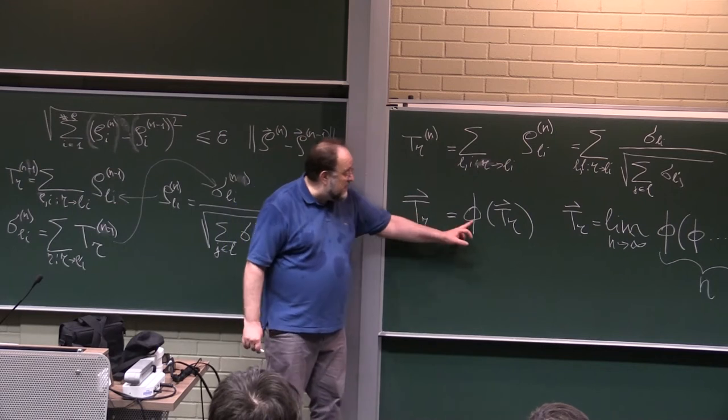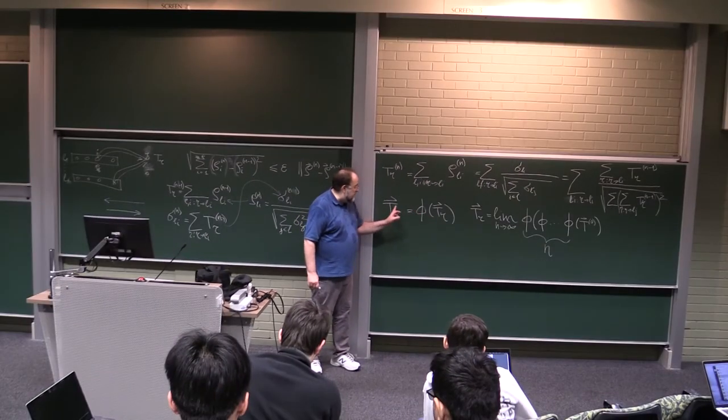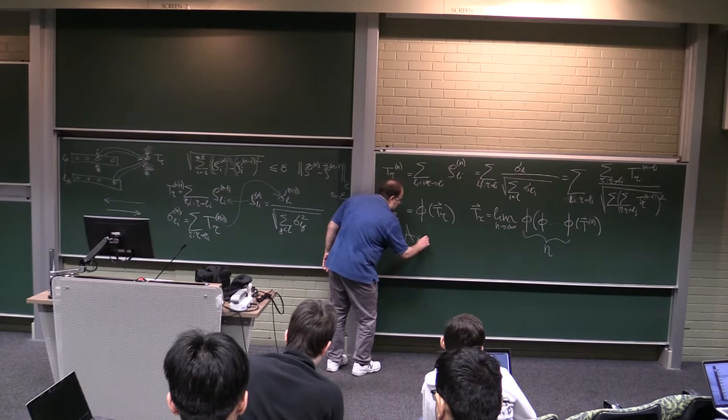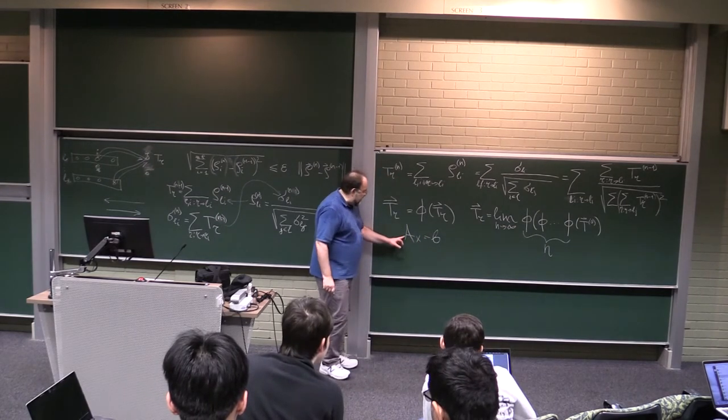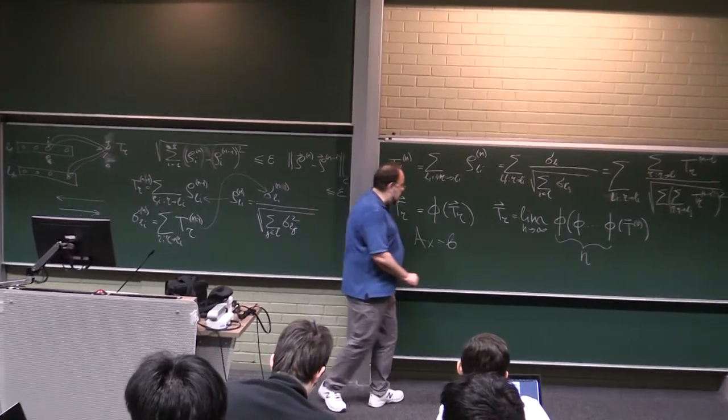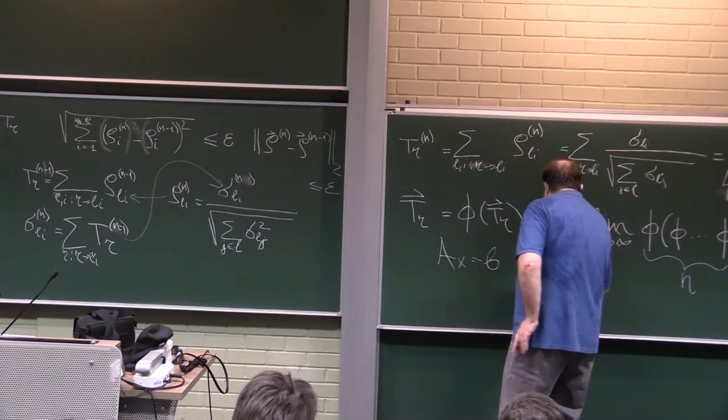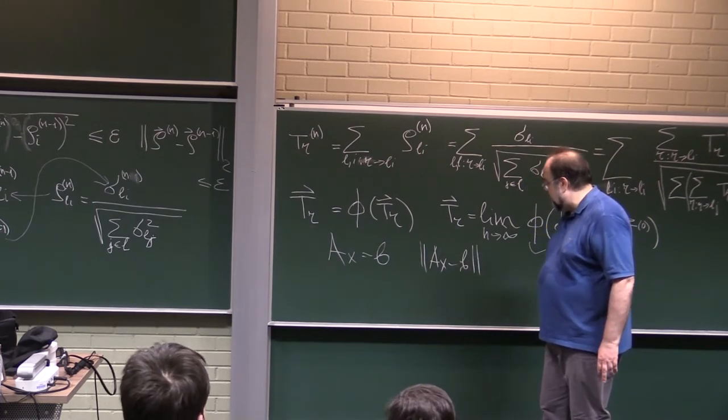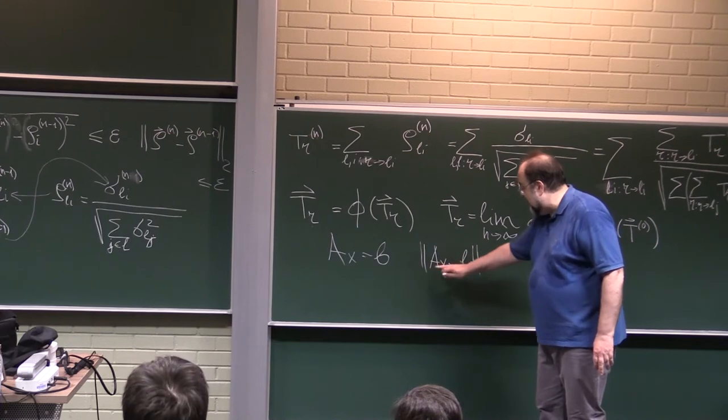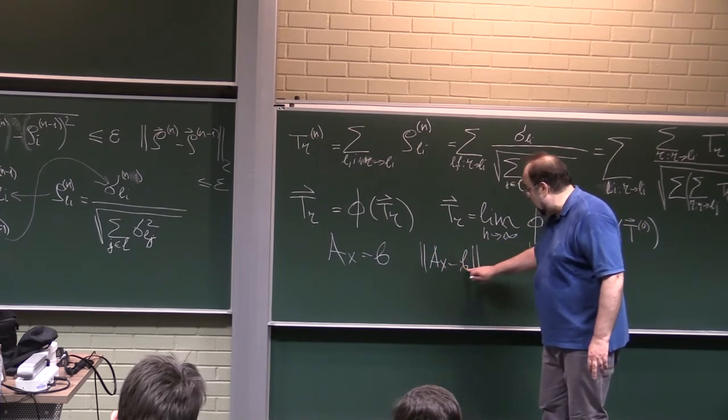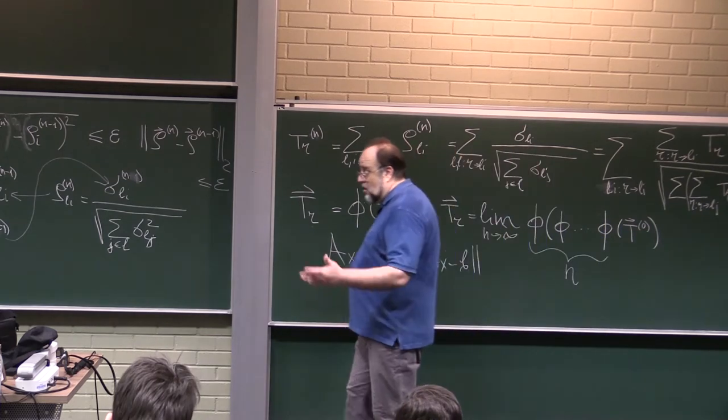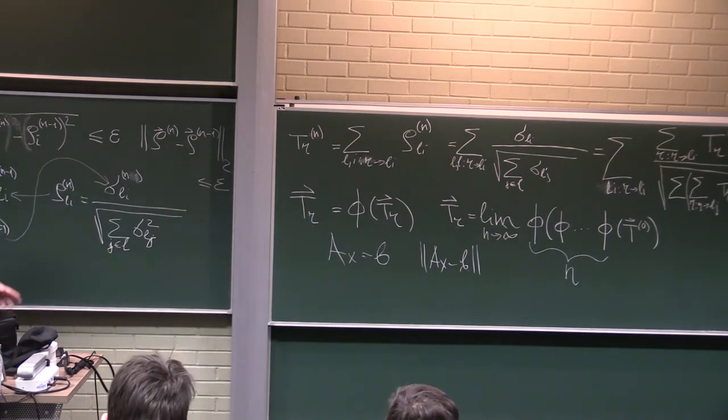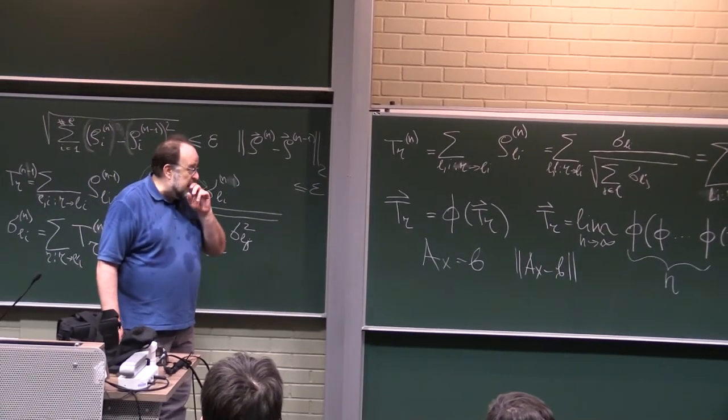We don't do Gaussian elimination with pivoting and what not, we simply find the solution as a fixed point of an operator that is just iteration. You are trying to minimize the difference, the root square mean difference between, so if you are looking for A of x equals to b, you are trying to minimize the difference between the norm of Ax minus b, and you do it iteratively by computing iteratively new approximations of x that converge, in fact, eventually to the solution b.